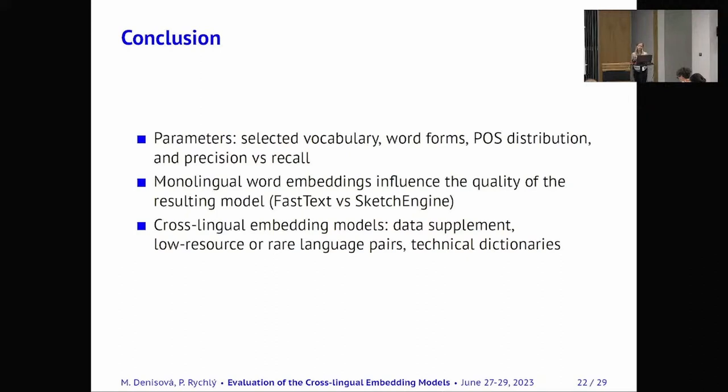So far cross-lingual embedding models are not good as self-sufficient data, but it can be used as a data supplement for for example, for low resource or rare language pairs, or it's also good for technical dictionaries, because they can be trained on domain-specific corpora, so they can retrieve specific vocabulary. So that's all for my side. Thank you.